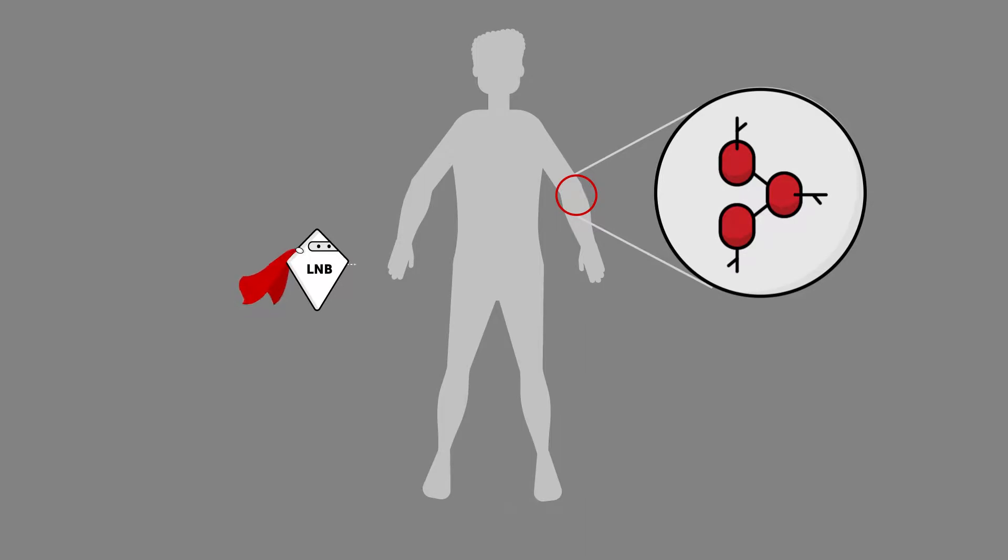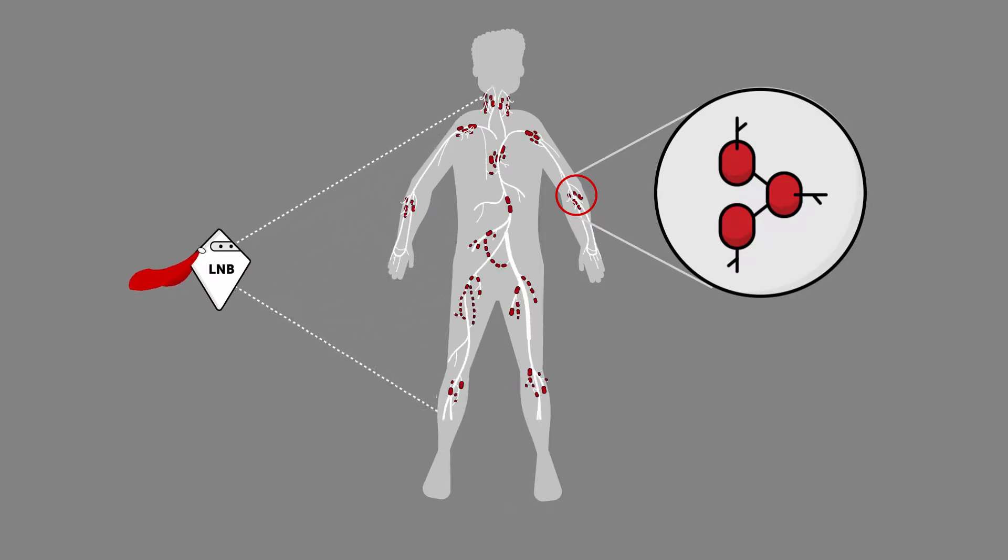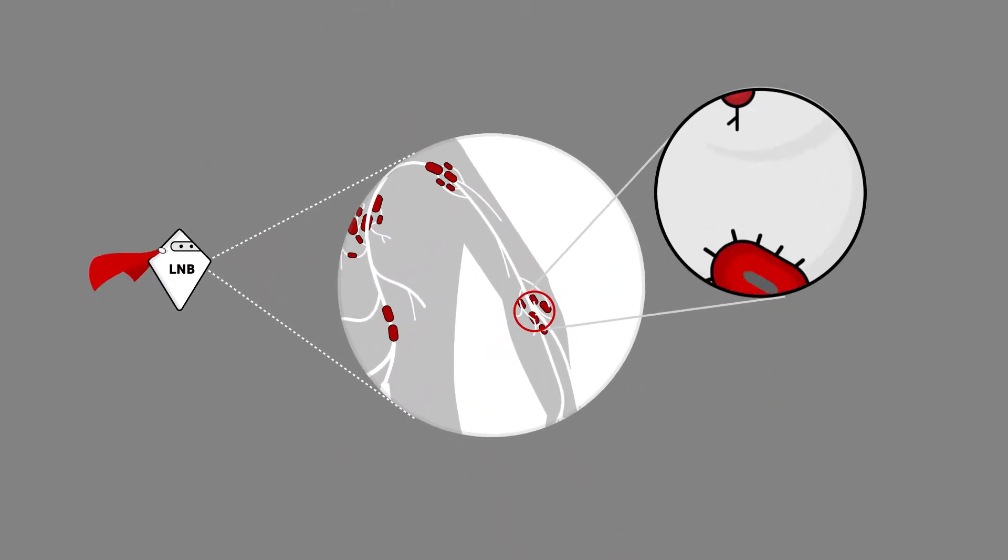Lymph nodes are small glands that are located throughout your body in the lymphatic system. The lymph nodes and lymphatic system filter bacteria, viruses, parasites, and other foreign material out of the body.